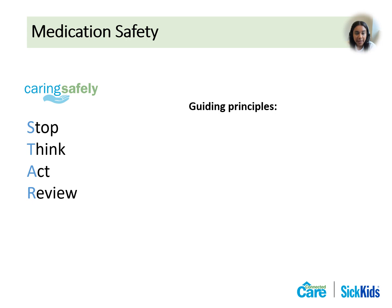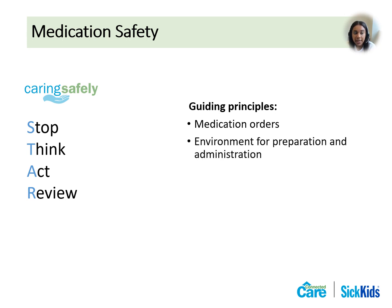The guiding principles of safe medication administration include ensuring the medication orders are up to date and accurate. Orders are good for one year and are typically reviewed at the beginning of every school year. Ensure there is a quiet and distraction-free environment with limited interruptions. Prior to giving a medication, complete an assessment of the child, and also complete an assessment after administration to understand the effect or change from baseline behavior or symptoms. Different medications require different levels of monitoring — clarify with the family or local pharmacy to understand required monitoring and common side effects.